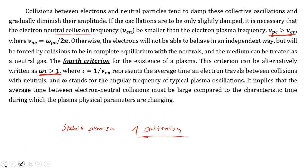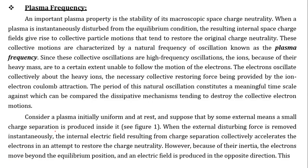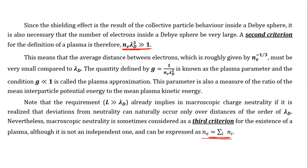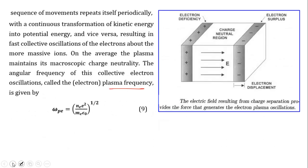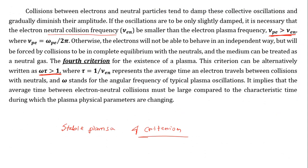In summary, four criteria must be satisfied for a stable plasma: (1) chamber dimension >> Debye length; (2) N_e · λ_D³ >> 1; (3) total ionization charge equals electronic charge; (4) plasma frequency >> electron natural collision frequency. These are the four criteria to form a stable plasma.